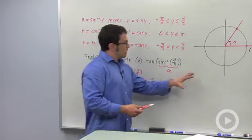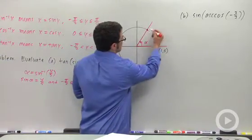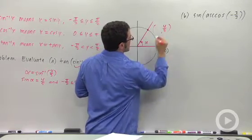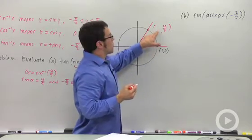So let me draw alpha like this. So I've drawn alpha in the first quadrant. The sine value is 4 fifths. And in order to solve this problem, I'm going to have to figure out what the x coordinate would be.